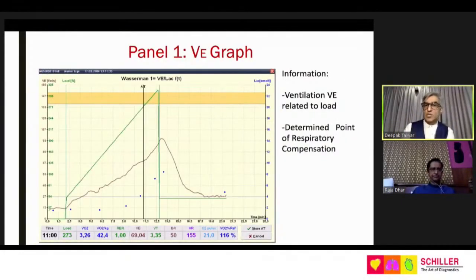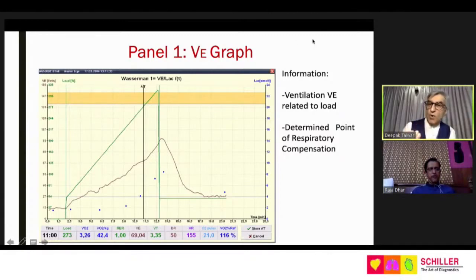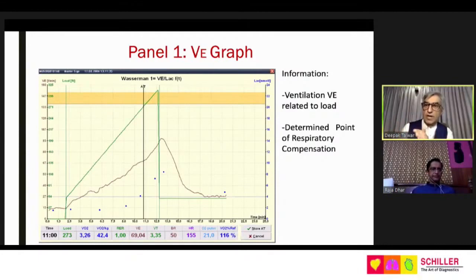Panel one of the Wasserman nine-panel graph is ventilation versus exercise. As exercise increases, ventilation also increases, then suddenly increases steeply. If you can identify two slopes on this graph, the inflection point — called the 'V-point' — represents the anaerobic threshold. This sudden acceleration in ventilation occurs because ventilation is closely matching CO2: the job of ventilation is not to allow CO2 to accumulate. The last approximately 20% of exercise is the zone in which VE suddenly accelerates, confirming the patient achieved near-maximal exercise.